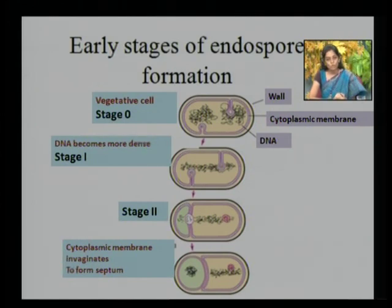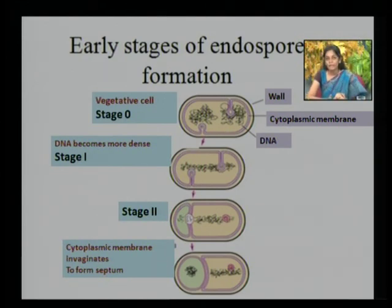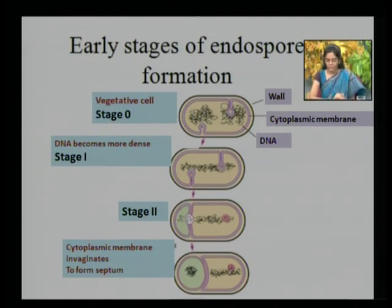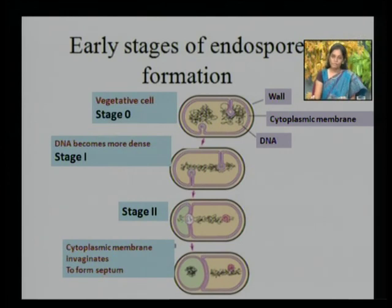This smaller cell is destined to become an endospore, also called a prespore. In certain endospore-forming organisms that are cocci, like Sporosarcina, these organisms lack this asymmetric cell division mechanism, but they still form an endospore using the same general systems and mechanisms.